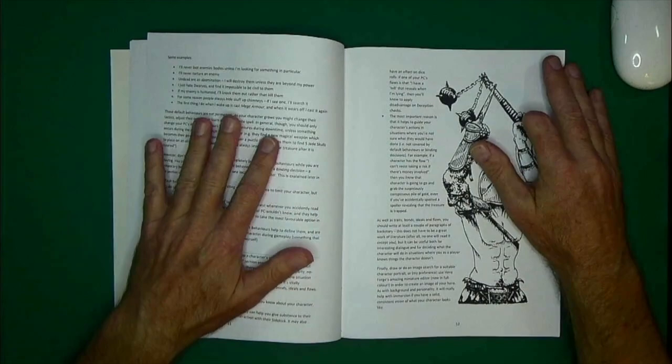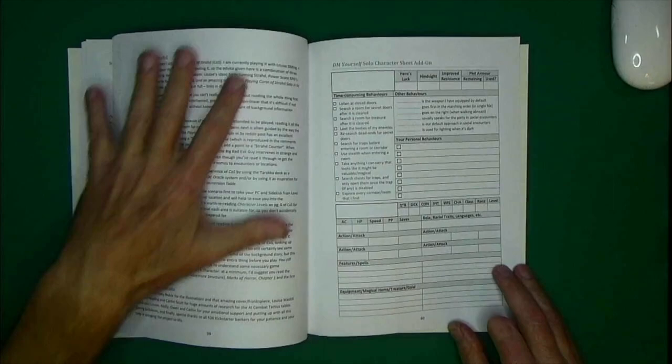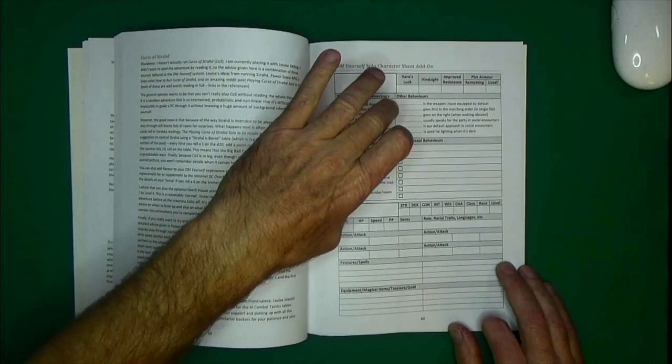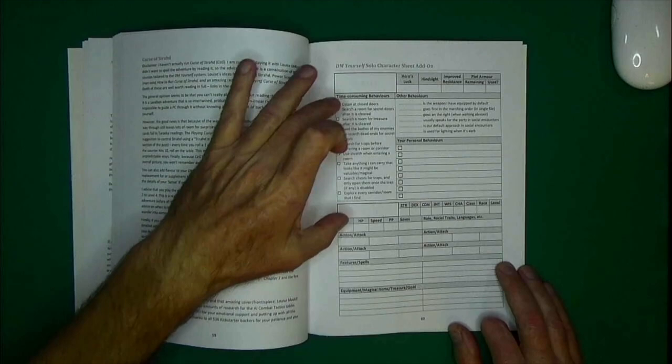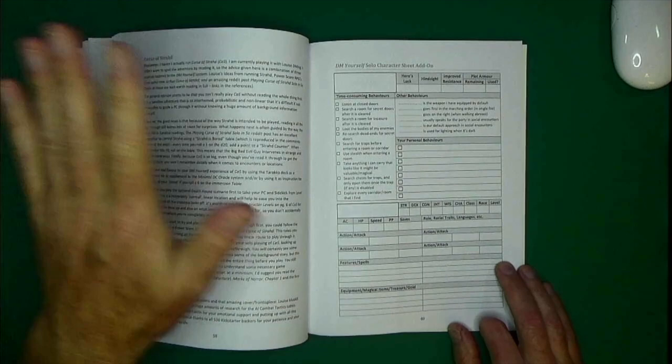And in the back of the book, in the appendix, they've kind of created their own character sheet for, again, Dungeons & Dragons 5th edition. But they incorporated everything that's in this book into this, and they actually put in these time-consuming behaviors, other behaviors, that you can pre-fill out while you're filling out your character sheet.